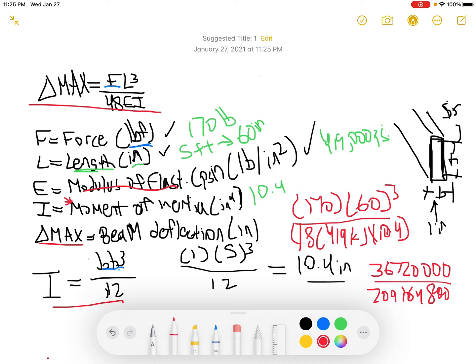And then on the bottom we do 48 times 419,000 times 10.4, then we get 209,164,800.